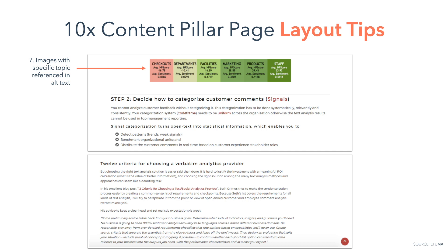This optimizes the images used on the page for image search results. Moving down to tips 8 and 9, use H2 tags for subheaders and H3 tags for list items. A proper HTML structure provides a clean user experience and makes it simpler to update the page. Taking the time to do this the right way is another opportunity for your website to be chosen as the featured snippet.